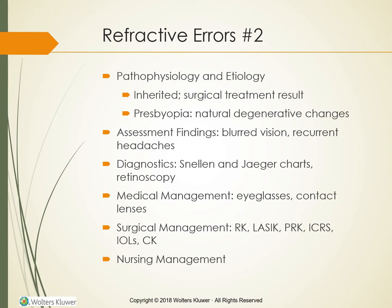Assessment Findings: People with refractive errors experience blurred vision, and some seek help for recurrent headaches caused by straining to see clearly. Refractive errors are detected with the Snellen and Jager charts. During retinoscopy, the vision of myopic people improves when concave trial lenses correct the focusing power of the eyes, while hyperopic people experience improvement when convex lenses are used. The amount of power needed to improve visual acuity indicates the degree of refractive error, which is not always the same in both eyes.